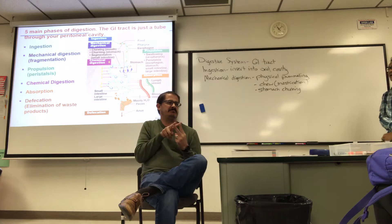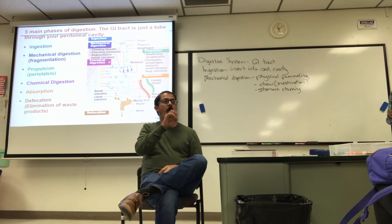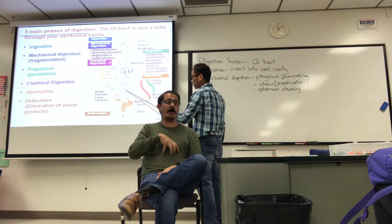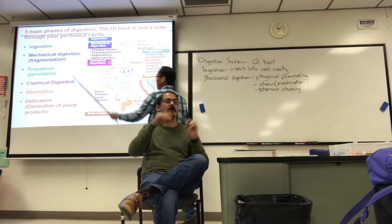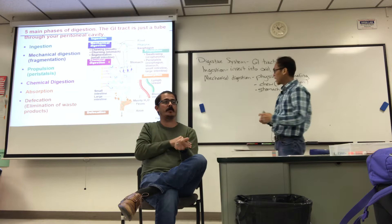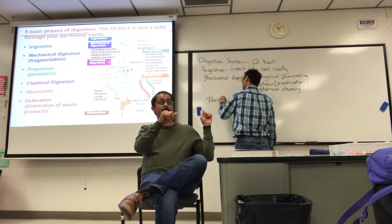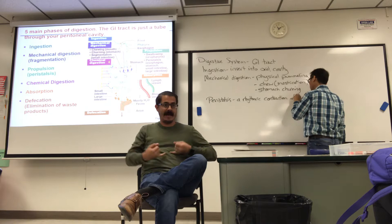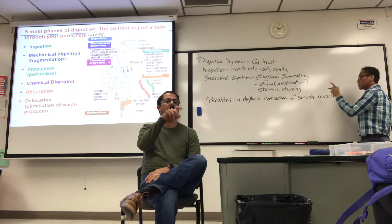Propulsion refers to moving food always in one direction toward the rectum and anus — from the mouth all the way through the stomach, small intestine, large intestine, and down. It's accomplished by a rhythmic contraction of smooth muscle called peristalsis. Peristalsis accomplishes propulsion.